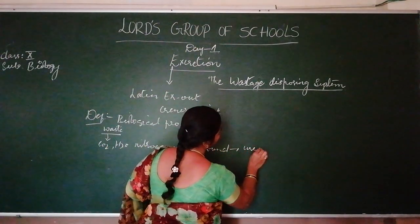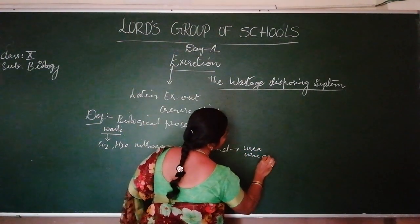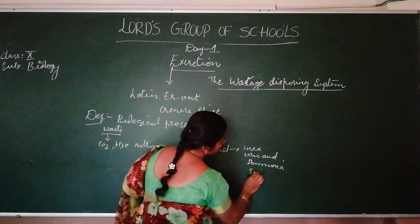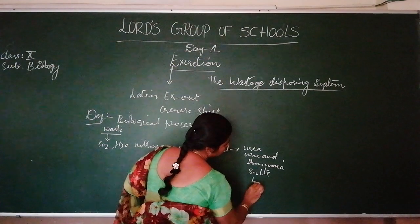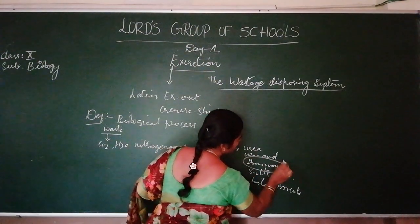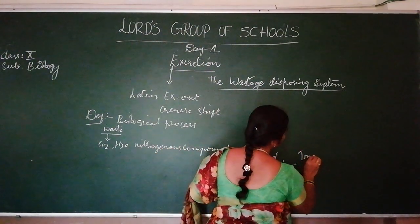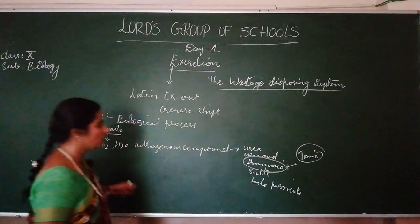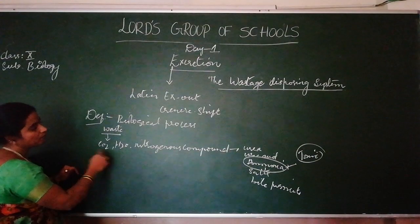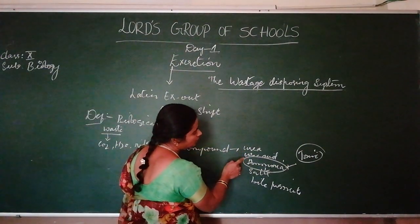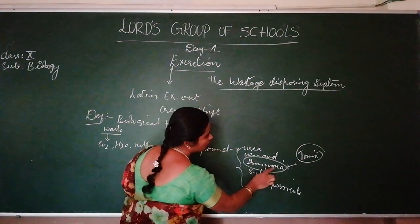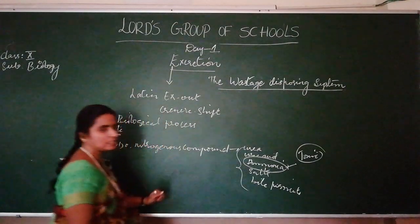The nitrogenous waste materials include urea, uric acid, ammonium salts, and bile pigments. Among all these, ammonia is the most toxic substance present in our body.